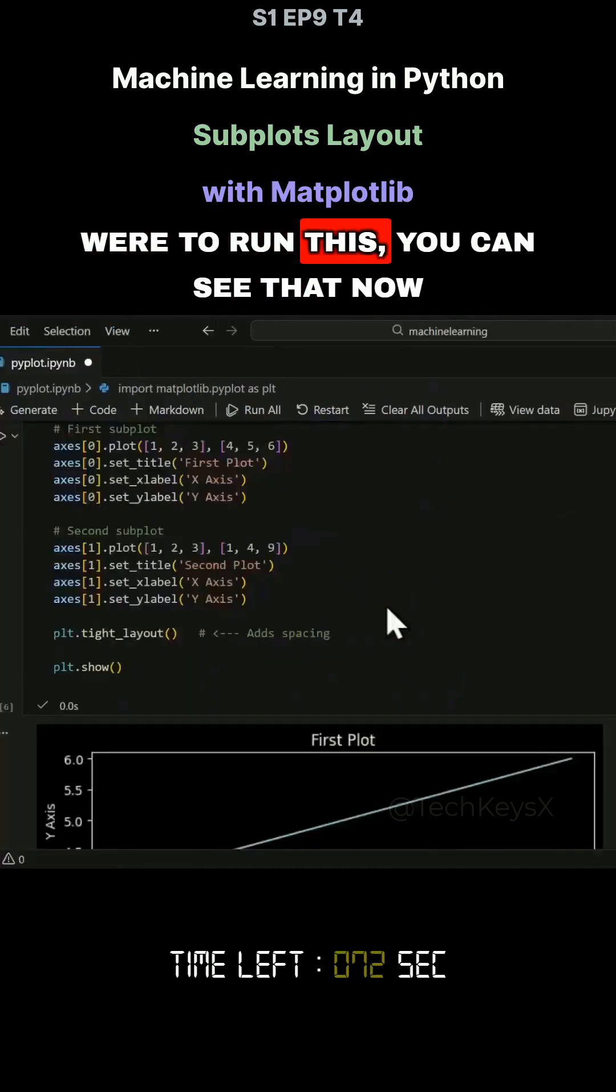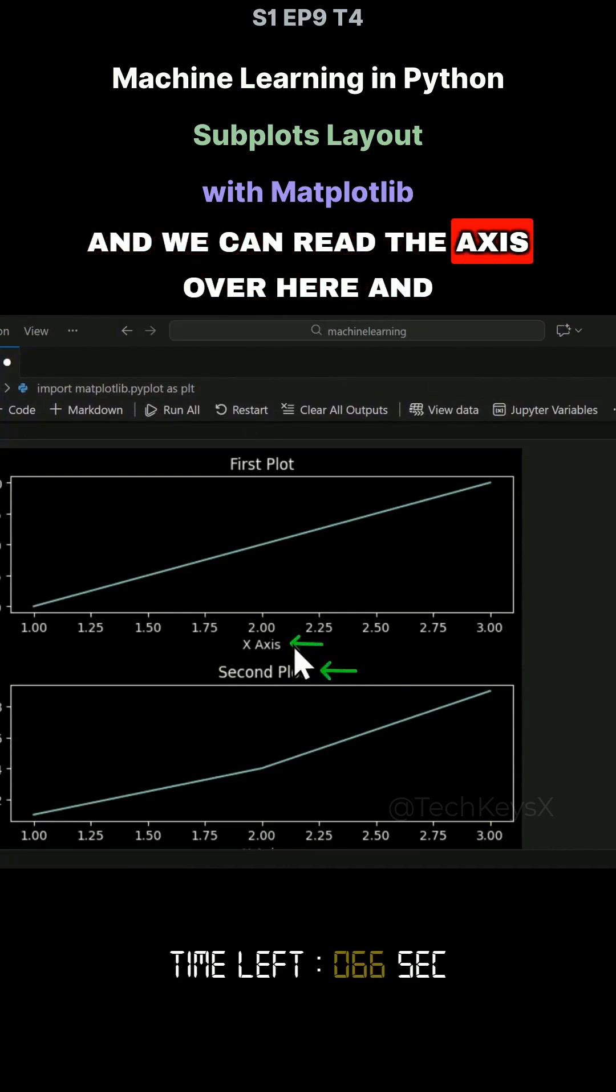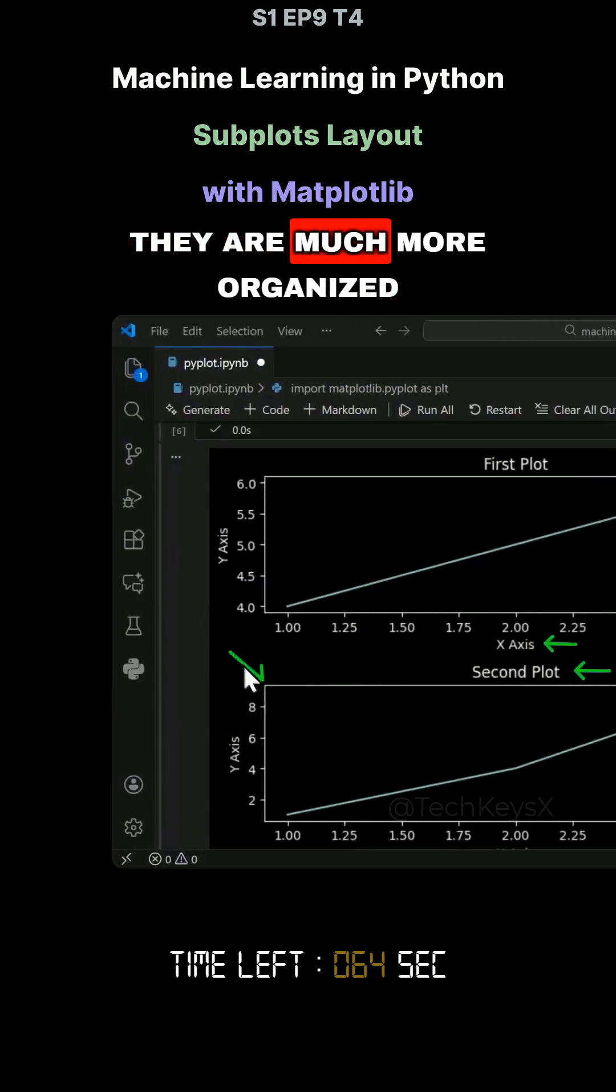So by doing tight_layout, if I were to run this, you can see that now my graphs are not overlapping each other. We can read the axis over here and they are much more organized.